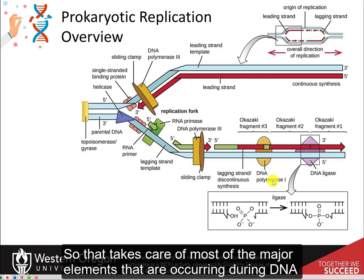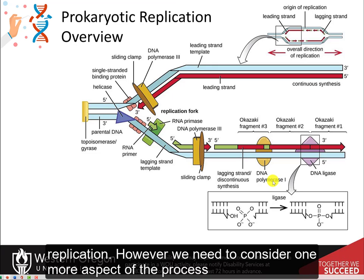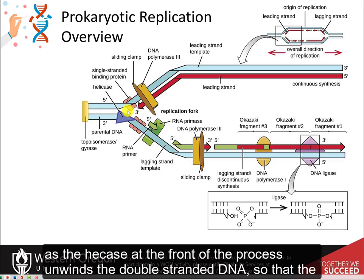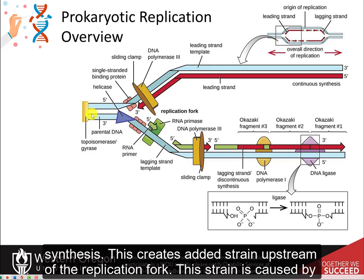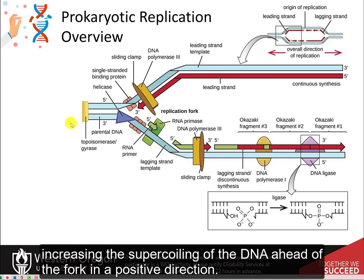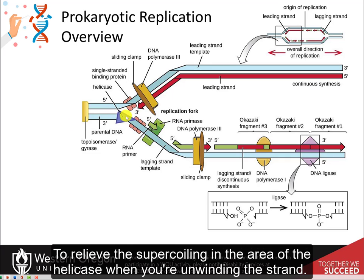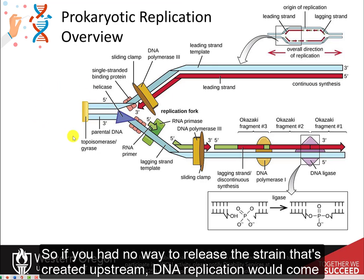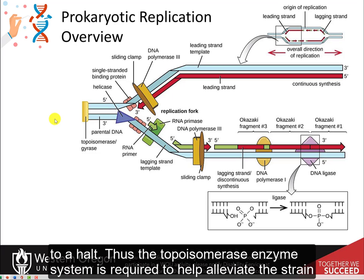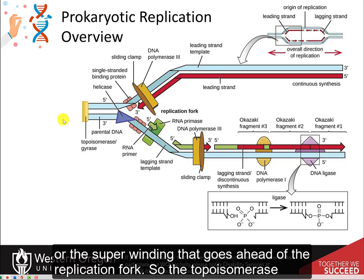That takes care of most of the major elements occurring during DNA replication. However, we need to consider one more aspect of the process. As the helicase at the front unwinds the double-stranded DNA so that the replication bubble can move in the direction of synthesis, this creates added strain upstream of the replication fork. This strain is caused by increasing the supercoiling of the DNA ahead of the fork in a positive direction. So if you had no way to release that strain, DNA replication would come to a halt. Thus, the topoisomerase enzyme system is required to alleviate the strain or superwinding that goes ahead of the replication fork.